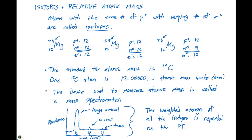We're going to take a weighted average of all of these isotopes to give the atomic mass. The weighted average of all the isotopes is reported on the periodic table and is referred to as the atomic weight.